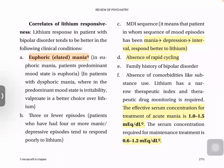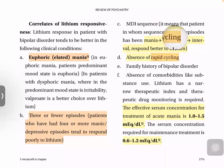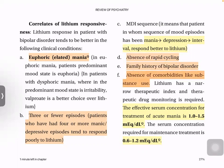Lithium responsiveness is better in euphoric mania, in patients with three or fewer episodes of mania (four or more episodes shows poor effectiveness), and in MDI sequence — where mood goes from mania to depression to interval. Lithium also works better in the absence of rapid cycling. Drug monitoring is required due to low therapeutic index. Effective concentration is 1 to 1.5 mEq/L. Maintenance therapy concentration is 0.6 to 1.2 mEq/L.